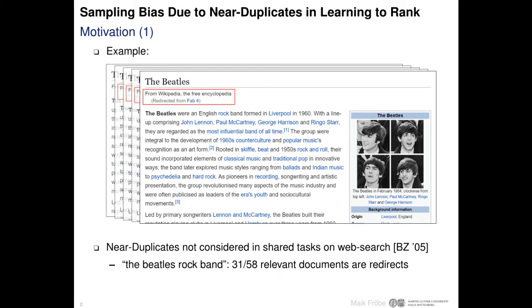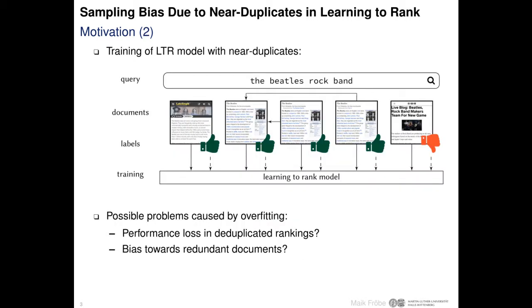The evaluations of shared tasks rarely consider near-duplicates in the used web crawls. Consider topic 157 in ClueWeb09 with the query 'The Beatles Rock Band' as an example. We find 58 documents judged as relevant for this query, but over half of them are near-duplicates to that Beatles article. That's an interesting observation for the training of learning to rank models, and we study this problem in our paper.